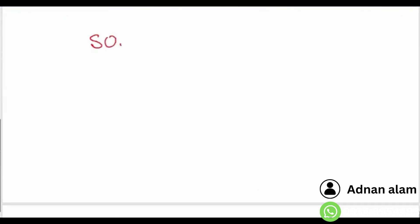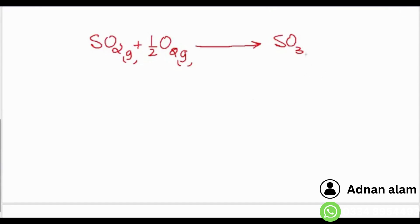Another important example: SO₂(g) + ½O₂(g) → SO₃. This reaction happens in air and is related to acid rain. When fuel burns, the sulfur in fuel produces SO₂ gas, which then combines with oxygen in air to make SO₃. This SO₃ contributes to acid rain.